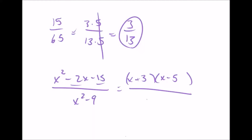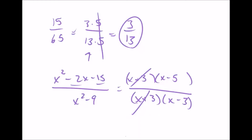On the bottom, x squared minus 9 is the difference of squares. We have x plus 3 and x minus 3. Just like we did on the top, we're going to cross out what's the same. So x plus 3 and x plus 3 cancel out, and our answer is x minus 5 over x minus 3. That's the simplified form.